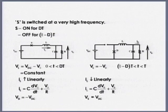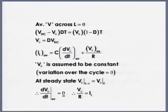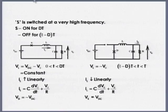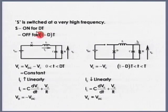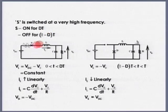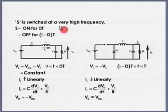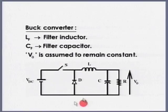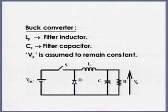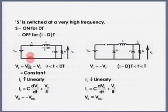The switch is turned on and off at a very high frequency. It is on for D × T, where T is the switching period and D is the duty cycle, and it is off for (1 − D) × T. When the switch is on, the equivalent circuit looks like this — the diode is reverse biased.